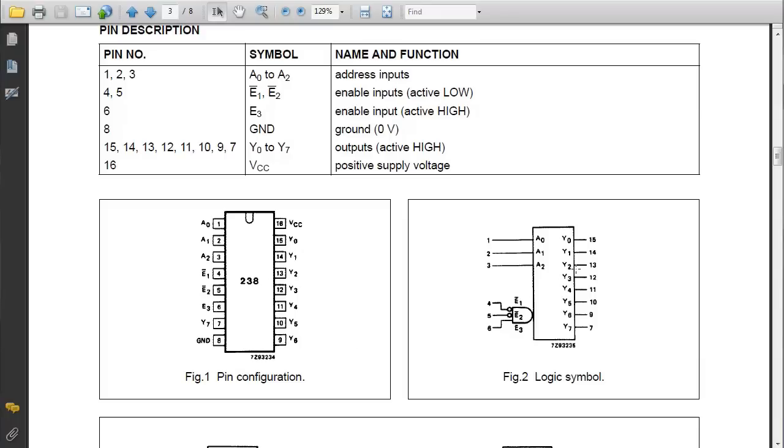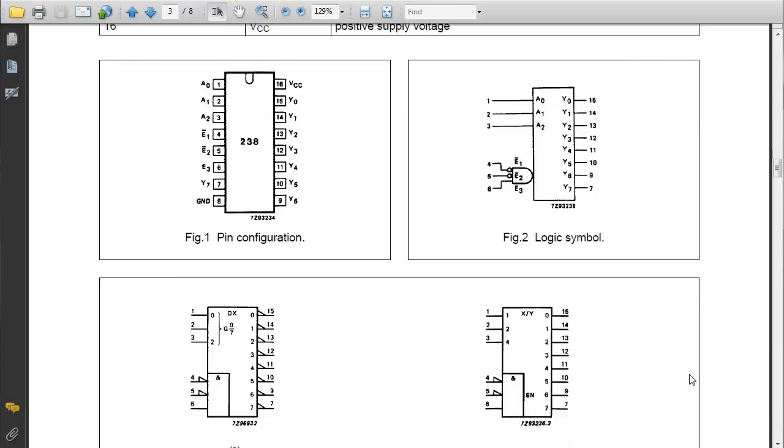The logic symbol for our chip looks like this. You can see here that the enable indicates that if pin 4 is low and pin 5 is low, that is the inverter symbol on the inputs, and pin 6 is high, the AND of all those three conditions, then the chip is enabled. And that is the way the circuit works.